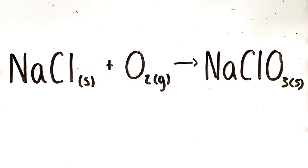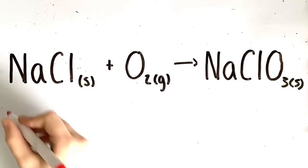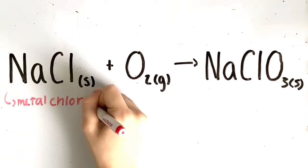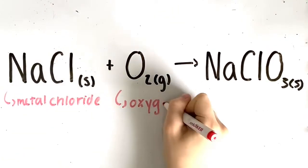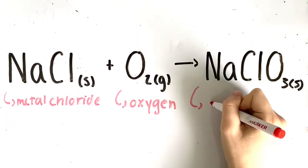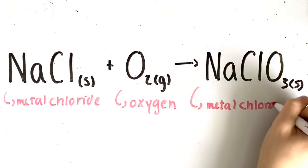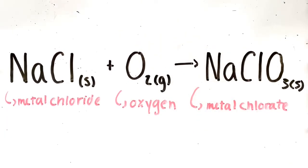An example of a metal chloride plus oxygen yielding a metal chlorate is sodium chloride plus oxygen gas yields sodium chlorate. Sodium chloride is our metal chloride, oxygen gas is our element, and sodium chlorate is our product.